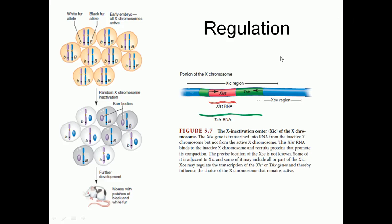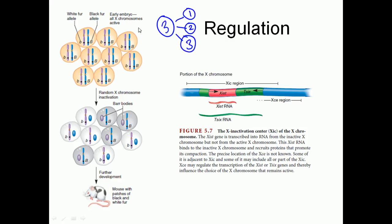The process of X inactivation occurs in three different stages. First is the initiation of the process, second is the maintenance of this process, and third is the transfer of this process. Looking at early embryo cells: all these early embryo cells have multiple cells, and their cells are destined to produce several different regions, such as the fur of that cat.